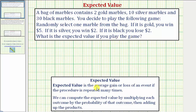The expected value is the average gain or average loss of an event if the procedure is repeated many times. We compute the expected value by multiplying each outcome by the probability of that outcome, then adding the products.